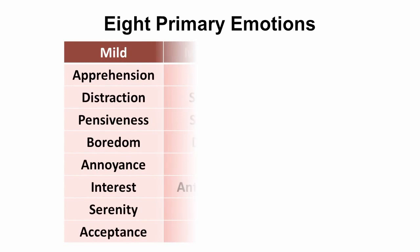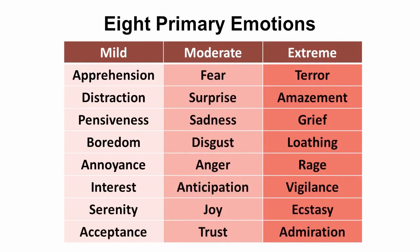A researcher by the name of Robert Plutchik developed an interesting model of emotion. He argued that there are eight different kinds of emotions that can vary in terms of their intensity: fear, surprise, sadness, disgust, anger, anticipation, joy, and trust. They can be more or less intense — the most extreme version of fear would be terror, and the extreme version of disgust would be loathing. The interesting thing about the model is that you can also combine emotions close to each other. Fear and surprise are right next to each other, so when you combine the two, you get a more complex emotion called awe.